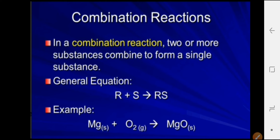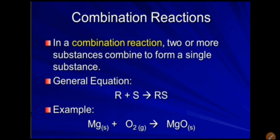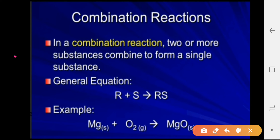What is a combination reaction? A combination reaction is a reaction in which two or more substances combine to form a single substance. On the reactant side there are two or more elements or compounds, and when they combine, a single product is formed. For example: R + S → RS, where RS is the single product.